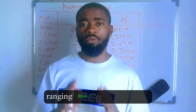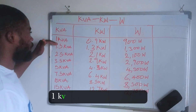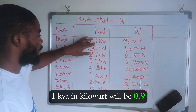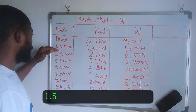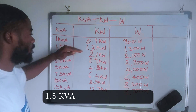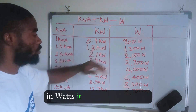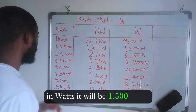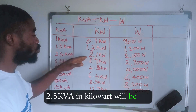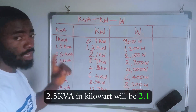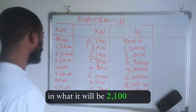1 kVA in kilowatt will be 0.9, and in watt will be 900. 1.5 kVA in kilowatt will be 1.3, and in watt it will be 1,300 watts. 2.5 kVA in kilowatt will be 2.1, and in watt it will be 2,100 watts.